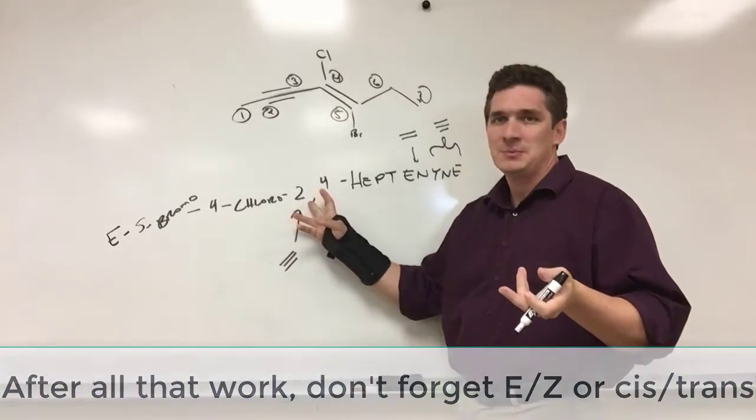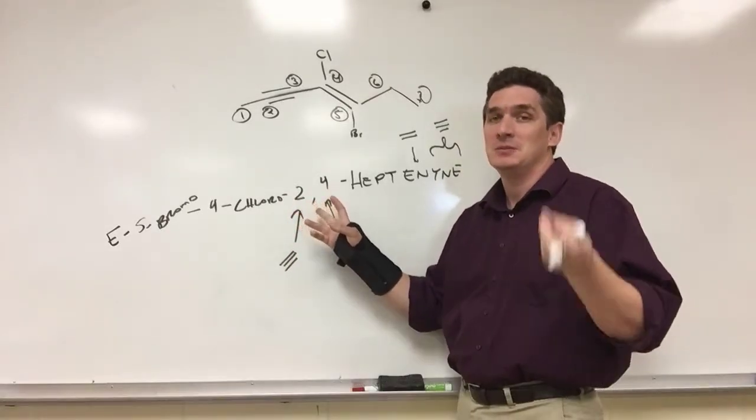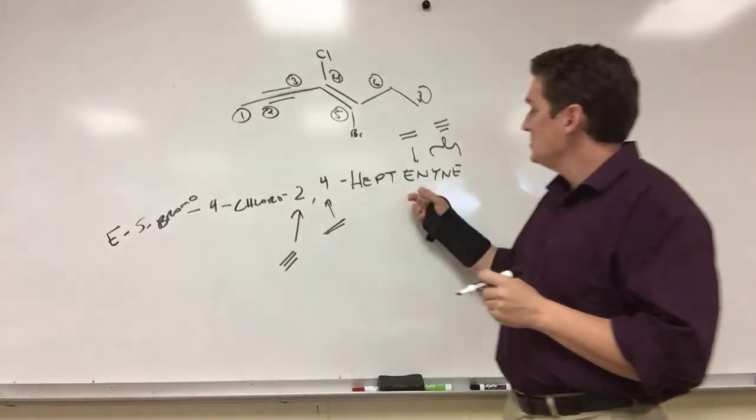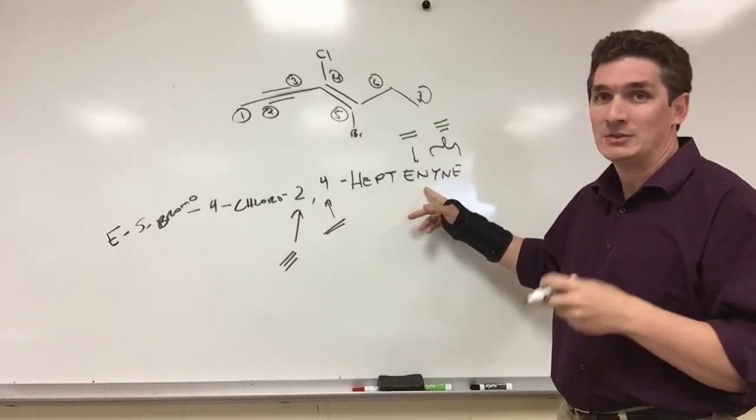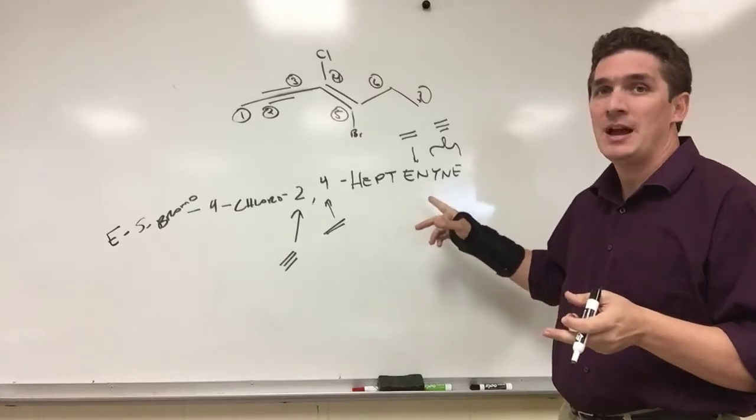Second, three issues actually. Your first number is going to designate the position of your triple bond. You want to minimize this number, and also your ending E-N-Y-N-E: EN for the alkene part, and YNE for the alkyne part.